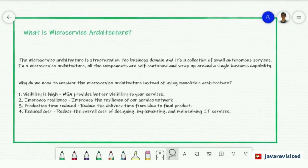So what is the microservices architecture? The microservices architecture is structured on the business domain and it's a collection of small autonomous services. In a microservices architecture, all the components are self-contained and wrap up around the single business capacity.